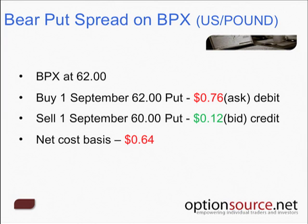Here's the consideration: if I wanted to lower my cost more, I would have to choose a strike price closer to where the underlying pair is currently trading. If I sold the 61-strike puts, I'd collect more credit but wouldn't capitalize on as much of a drop. On the other hand, if I was more aggressively bearish and felt the BPX would drop significantly below 60, I could sell the 59s or 58s — collecting less premium but giving myself more opportunity to participate in a bigger downside move. These are the key considerations when selecting which strike prices to sell when constructing a debit spread.